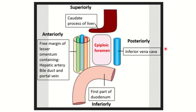The anterior and posterior boundaries are completely vascular — meaning vessels and the duct are present there. Superiorly and inferiorly, they are visceral margins: superiorly is the quadrate process of the liver, and inferiorly is the first part of the duodenum. So the upper and lower borders are formed by viscera, while the anterior and posterior borders are formed by vessels.